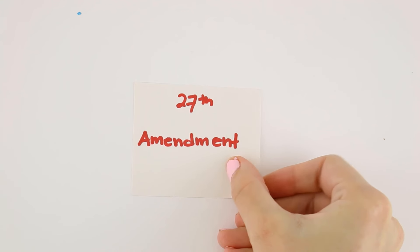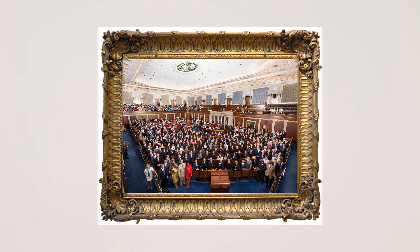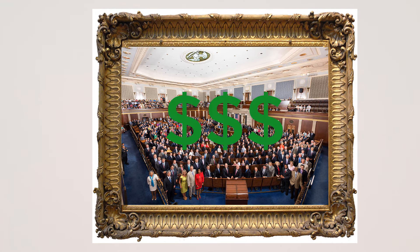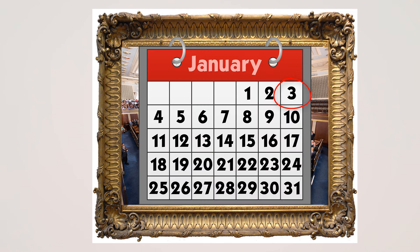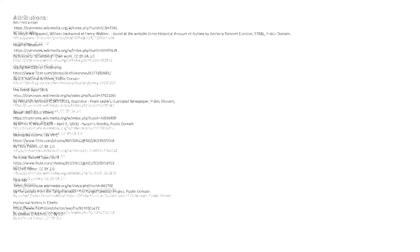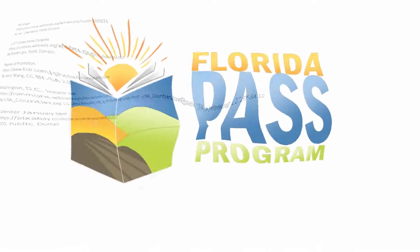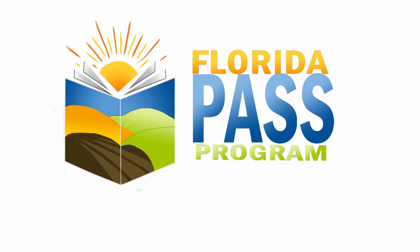And finally, the 27th Amendment states that congressional pay increases do not go into effect until the next term. This means that if Congress votes to increase their own pay, that pay raise will not go into effect until after the next election when the new term starts.